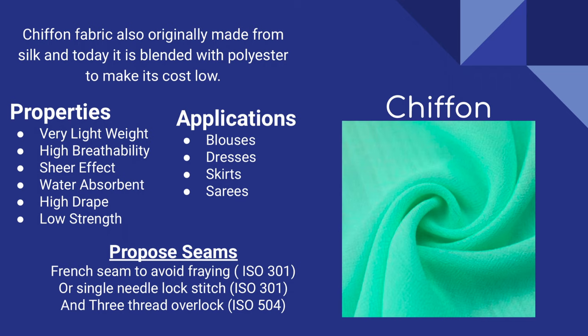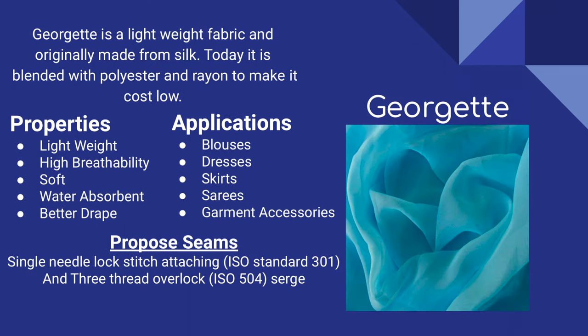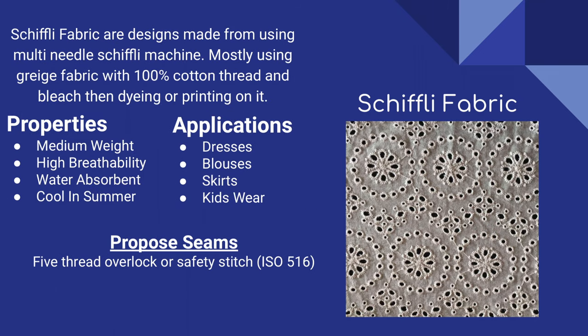Moving on, we have georgette — a lightweight fabric originally made from silk, today blended with polyester and rayon to make it cost effective. If you're wondering about the difference between chiffon and georgette: chiffon is thinner and sheerer and drapes easily, whereas georgette is a thicker ply resulting in a heavier fabric, although it's still sheer. Georgette is used in blouses, dresses, skirts, saris, and garment accessories. The proposed seam for georgette is a single-needle lock stitch and three-thread overlock.